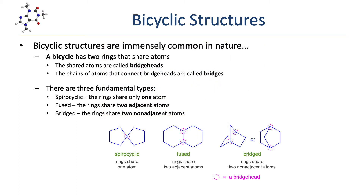In a bridged bicyclic compound, the rings share two non-adjacent atoms. The example shows the same bridged bicyclic system drawn two different ways. In the drawing on the right, you can see an outer six-atom ring, a five-atom ring on the right side, and another rather distorted five-atom ring on the left side. The two circled bridgeheads are shared by each ring but are not bonded to each other. There are three distinct bridges: a two-atom bridge to the left, a similar two-atom bridge to the right, and a one-atom bridge in the center.